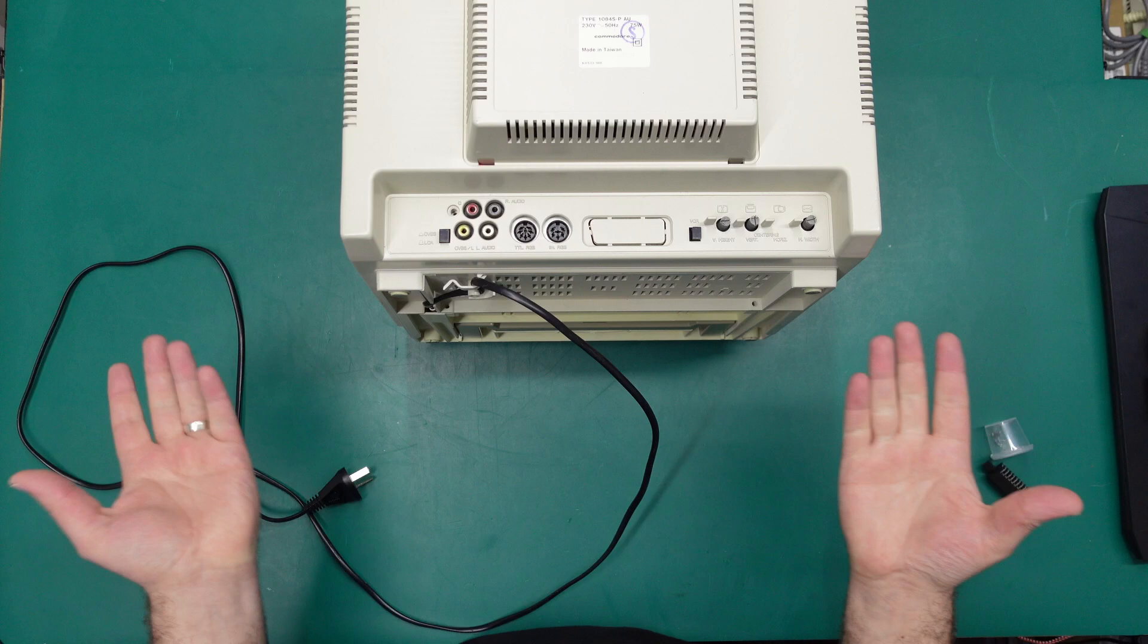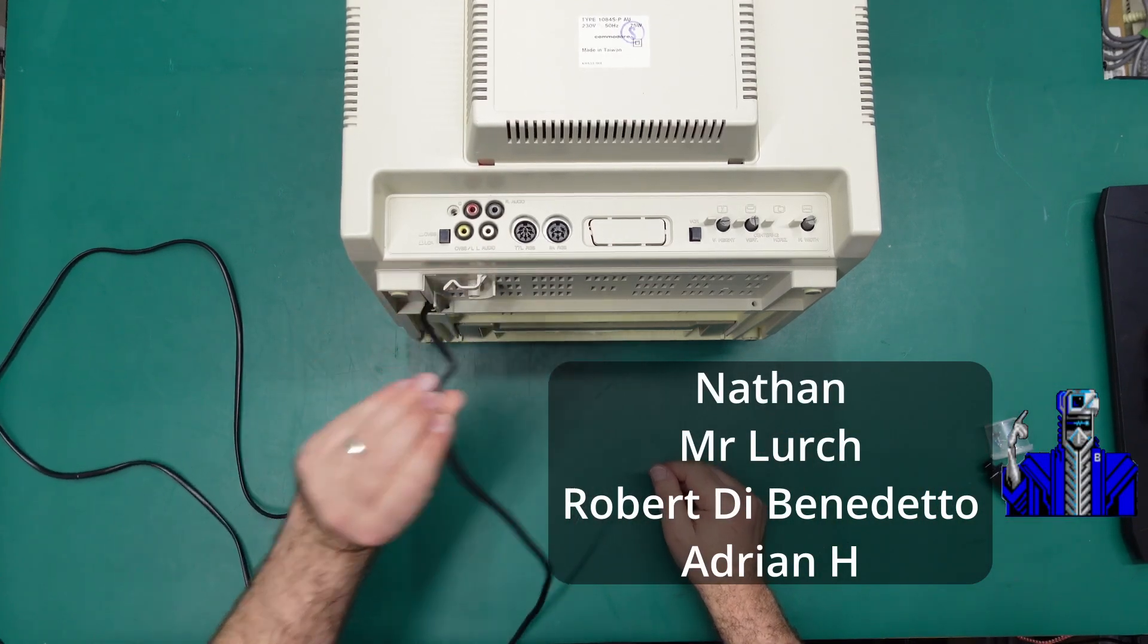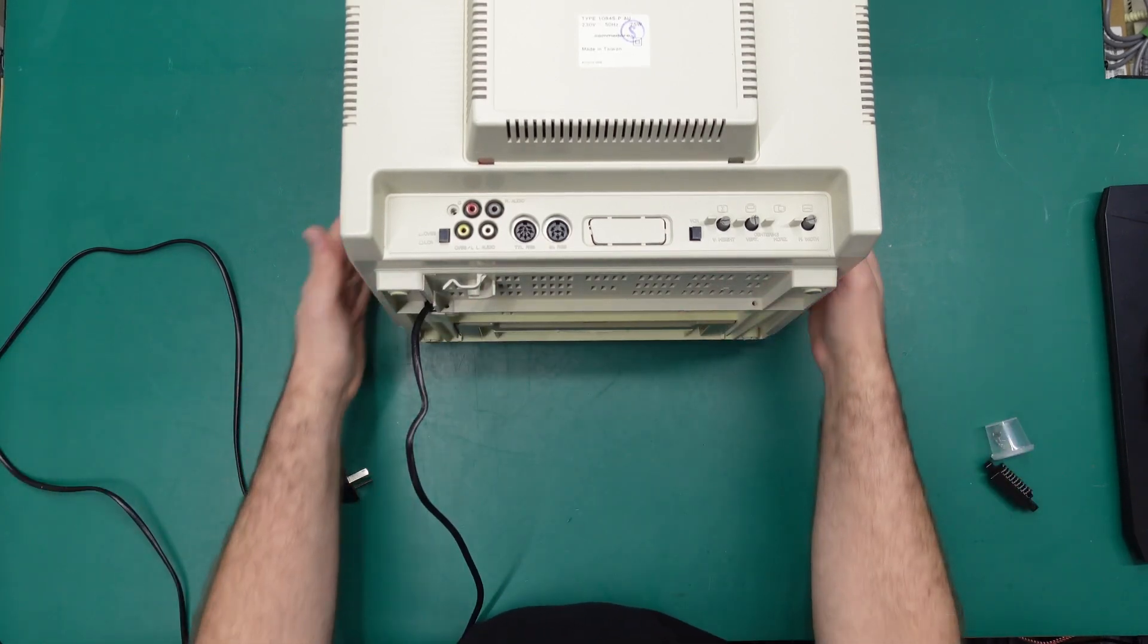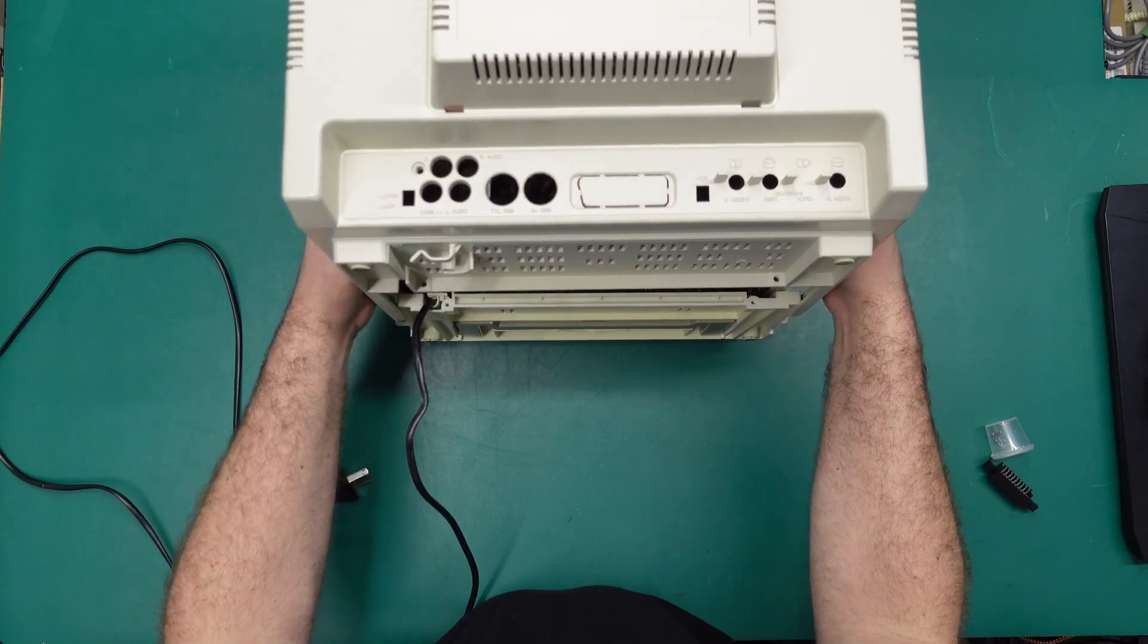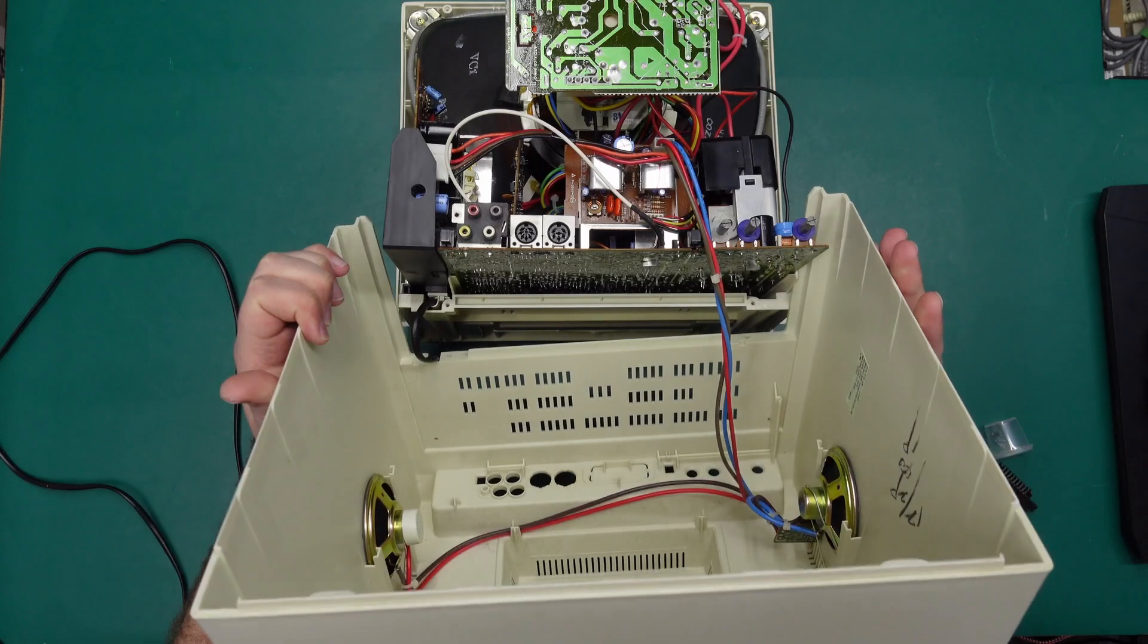So to start with we need to remove the rear cover obviously. First things first we just need to unhook this power cord from its little channel that it's in and remove all the screws.